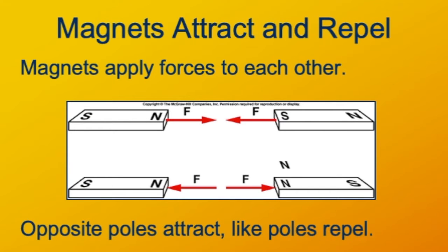Just as there are two kinds of electric charges, positive and negative, there are two kinds of magnetic poles, north and south.